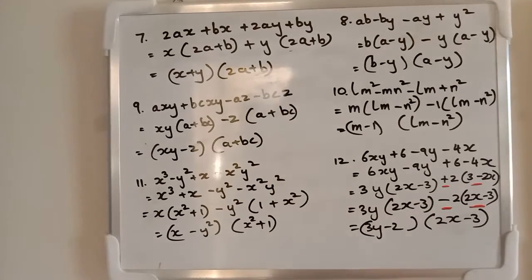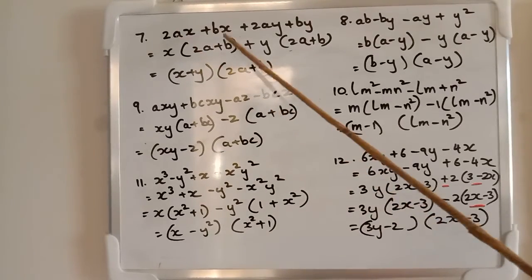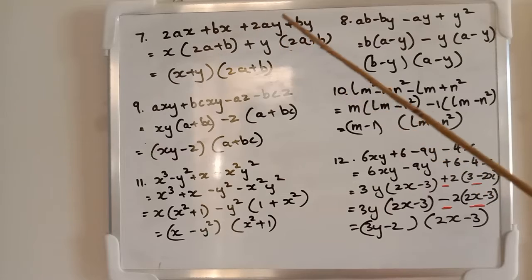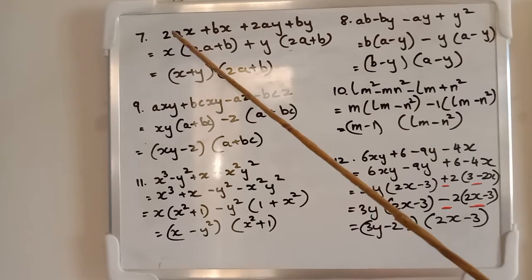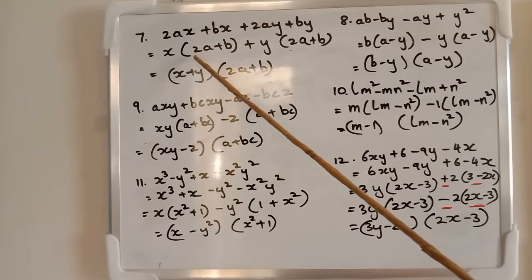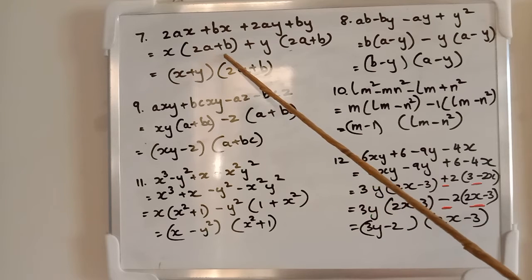Now we continue with the 7th question: 2ax + bx + 2ay + by. What do we do here? We take out x. x and what is remaining? 2a + b inside the bracket.